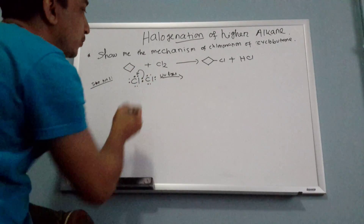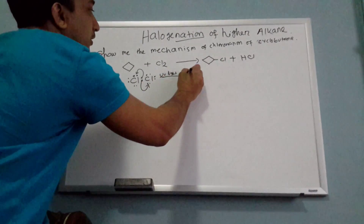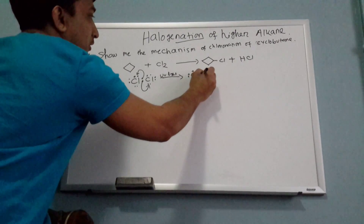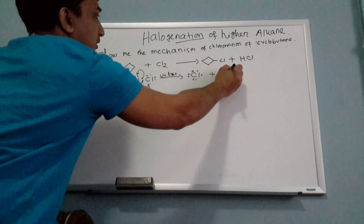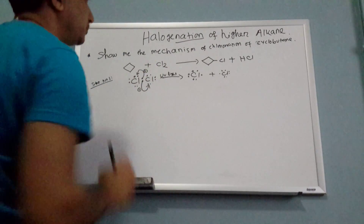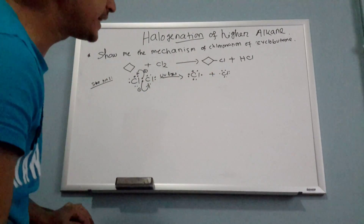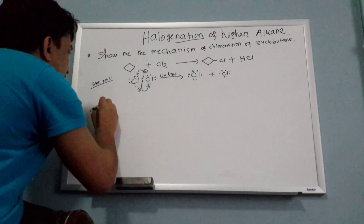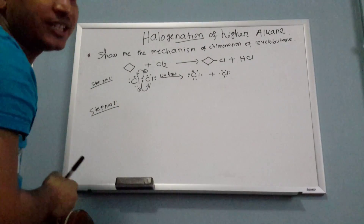With UV light you break down Cl₂ and make free radicals. This one gets one radical and this one gets one radical. This step is called initiation.